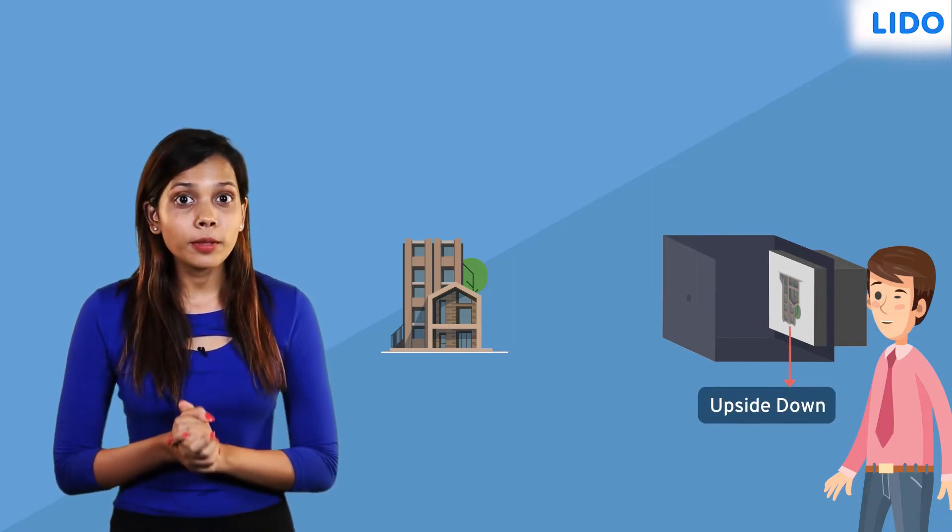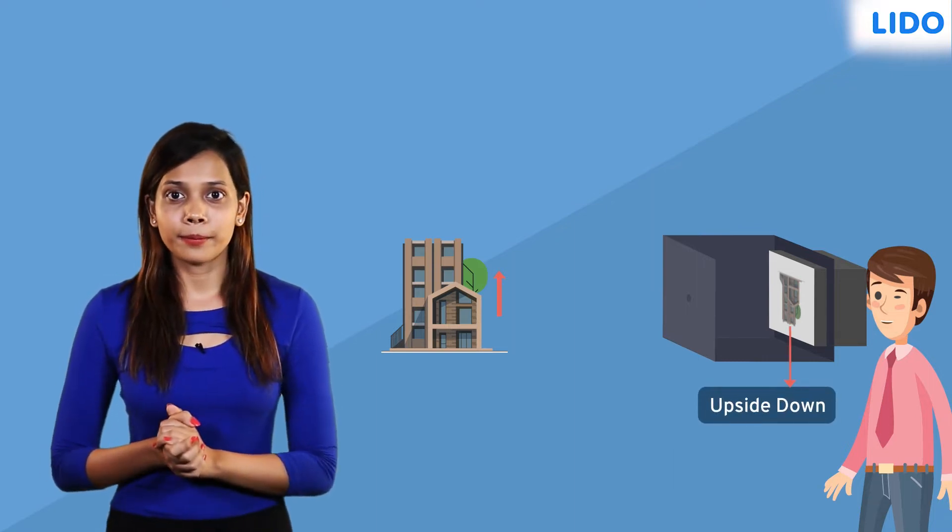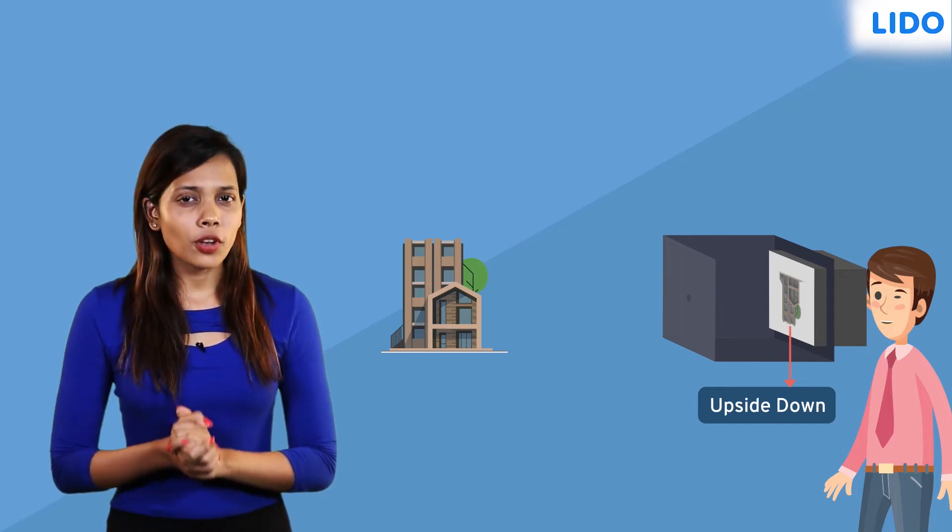What do you see when you point the pinhole camera at the building? The building seems to be upside down even though the building is still the right way up. Why does the image appear inverted?